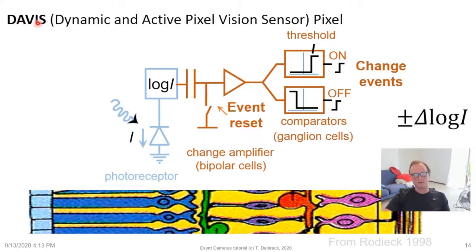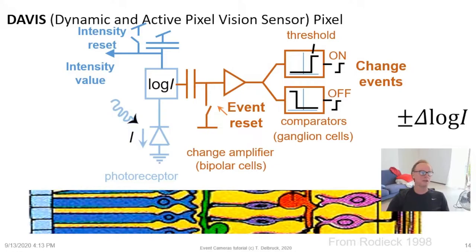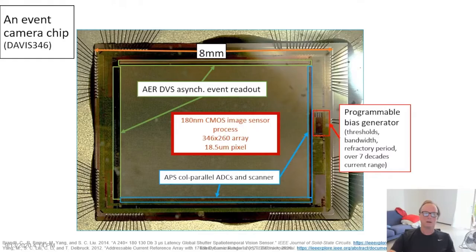In our latest sensors we call DAVIS — Dynamic and Active Picture Vision Sensor — we take the DVS pixel and add another three- or four-transistor circuit consisting of a capacitor to integrate the photocurrent. The same photocurrent that flows through the logarithmic photoreceptor is now also integrated onto a capacitor. At the beginning of a frame the capacitor is reset to a high voltage, then it ramps down. We read out the intensity at the end of the integration time, and taking the difference of the two values gives a differentially double-sampled measure of absolute intensity — providing both a static and a dynamic output stream.